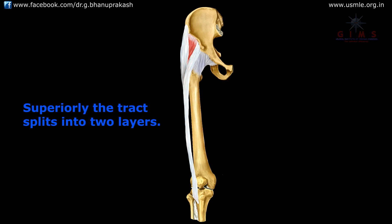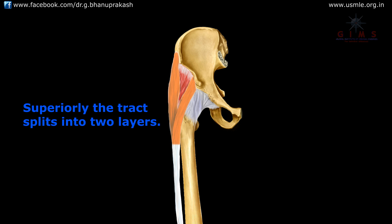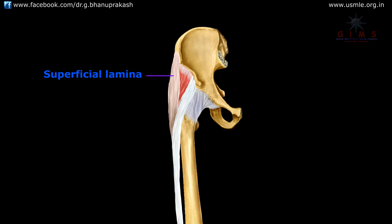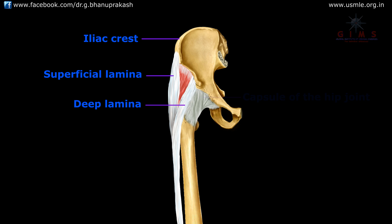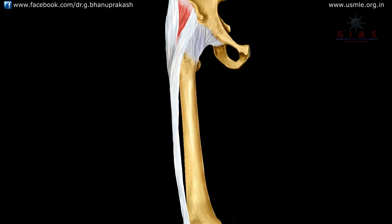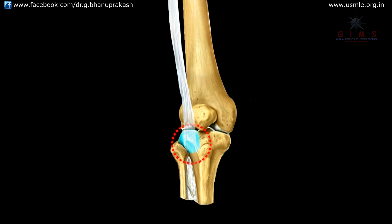Superiorly, the iliotibial tract splits into two layers to form the superficial lamina and the deep lamina. The superficial lamina is attached to the iliac crest, and the deep lamina blends with the capsule of the hip joint. Inferiorly, this tract is attached to a smooth area on the anterior surface of the lateral condyle of the tibia.